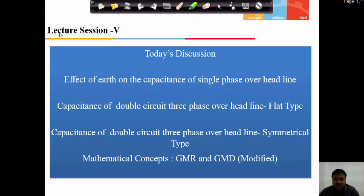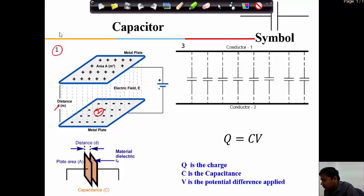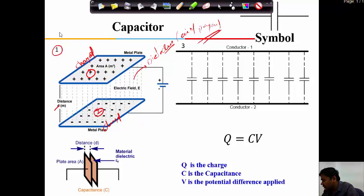We will also discuss mathematical concepts such as GMR and GMD. Regarding capacitance — if two parallel plates are separated by a small distance d, they form a capacitor. The medium between them is called the dielectric media, which may be air, paper, or other materials. In a transmission system, one transmission line acts as one plate and the other as the second plate, separated by air as the dielectric.